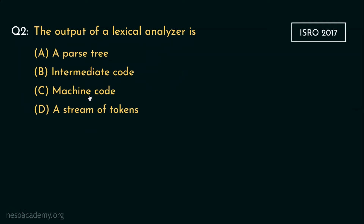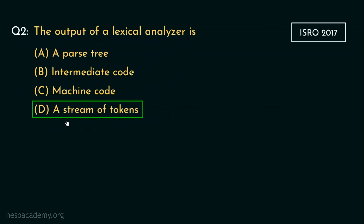Option C, machine code, also cannot be the choice. The compiler produces only assembly language code; machine code is actually the output of the language translator. Finally, option D, a stream of tokens, is the only option left — and it is the correct answer. In the previous sessions, we observed that the lexer takes lexemes as inputs and produces a stream of tokens and passes that to the parser. So for this question, option D is the only correct choice.